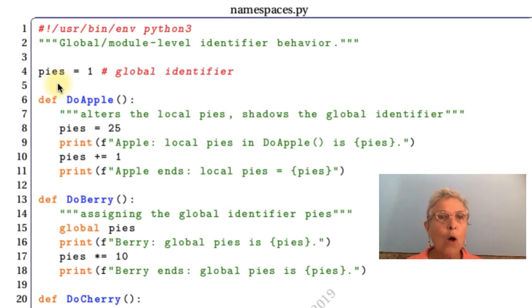Okay, so on line 4 we say pies equals 1, and in DoApple on line 8 we say pies equals 25. Now that's a local pies, and having a local pies means that we cannot see the global pies. It is hidden from us. This pies equals 25, you'll see that we report it in the output. We add one to it and we report it again. There is no way in Apple to get to the global pies.